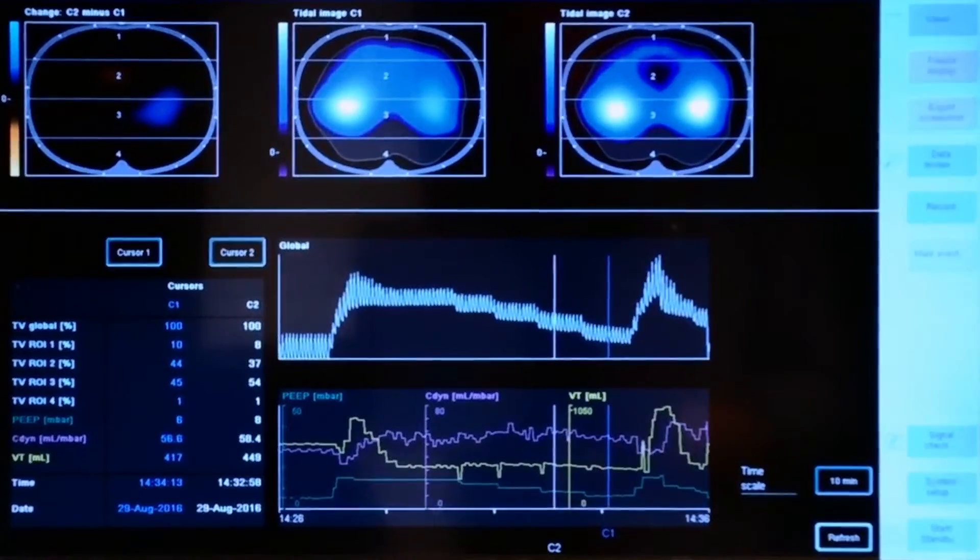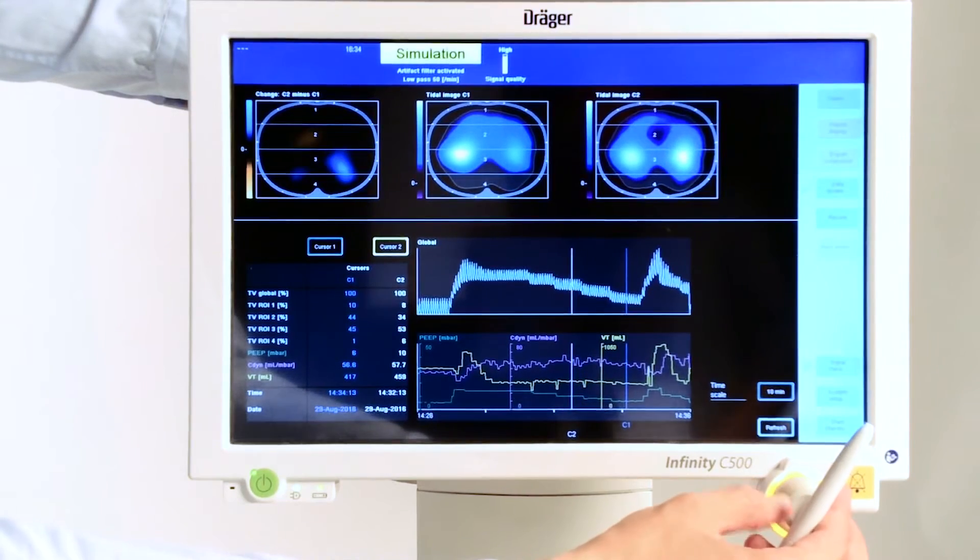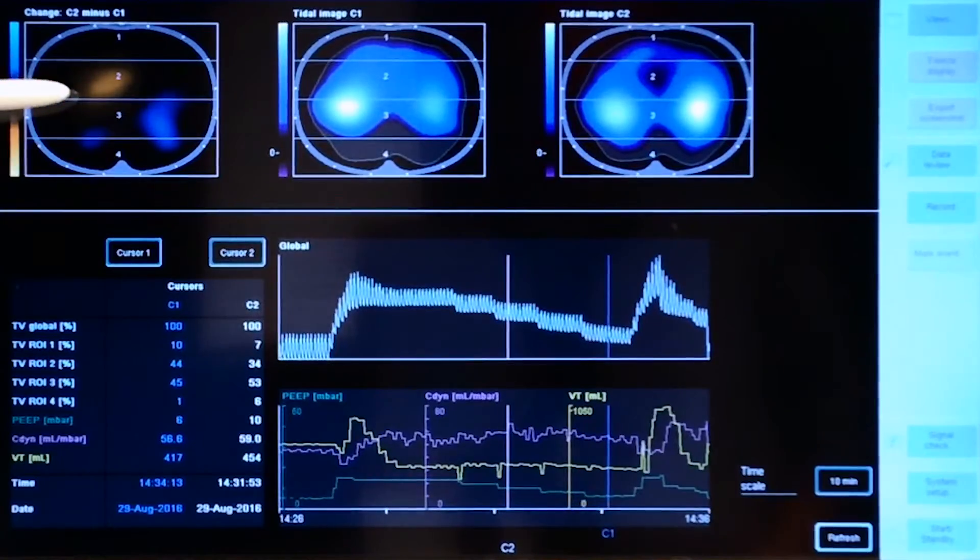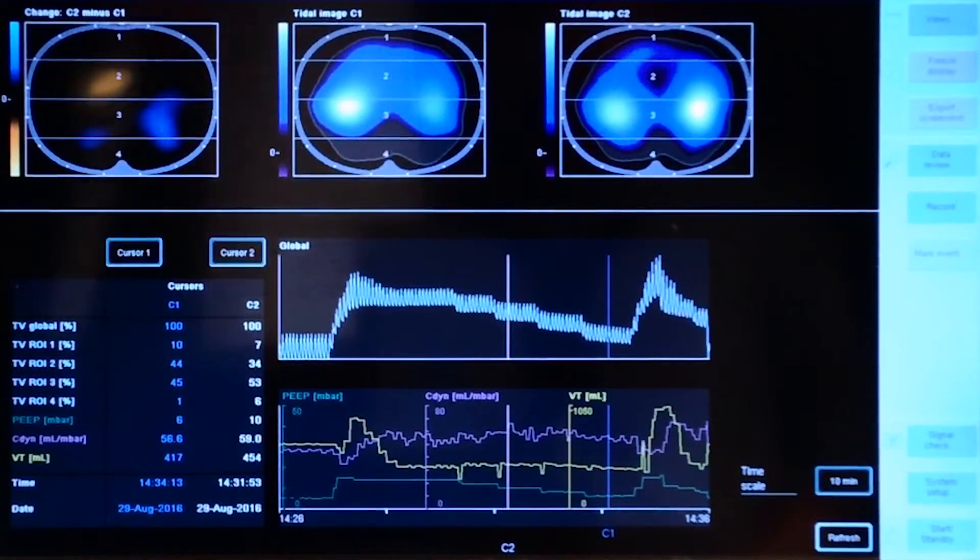However, if we go higher with the PEEP level to a PEEP level of 10, we can see that the colors in region of interest number 2 are becoming more and more orange.